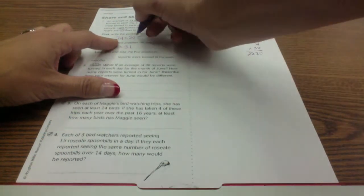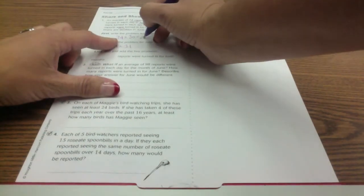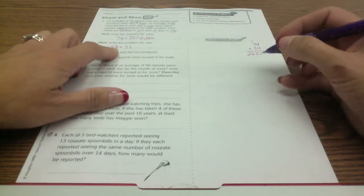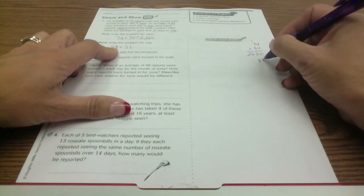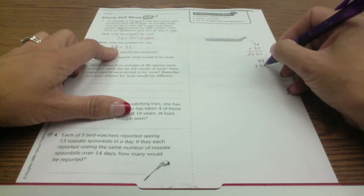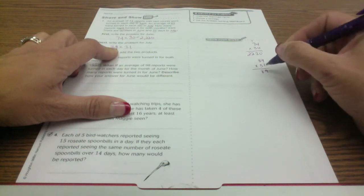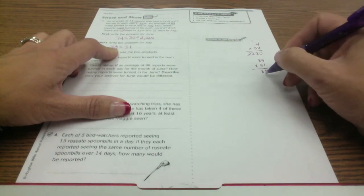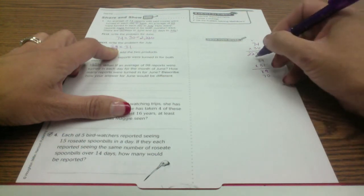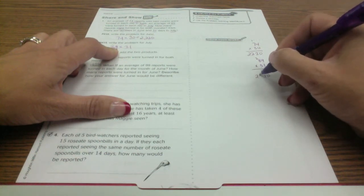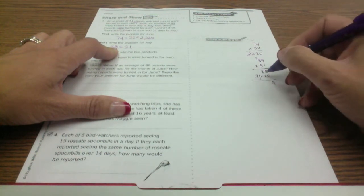So this one equals 2220. The next one is 89 times 31. 1 times 89 is 89. 30 times 9 is 270, 3 times 8 is 24 plus 2 more is 26, and then I add those.